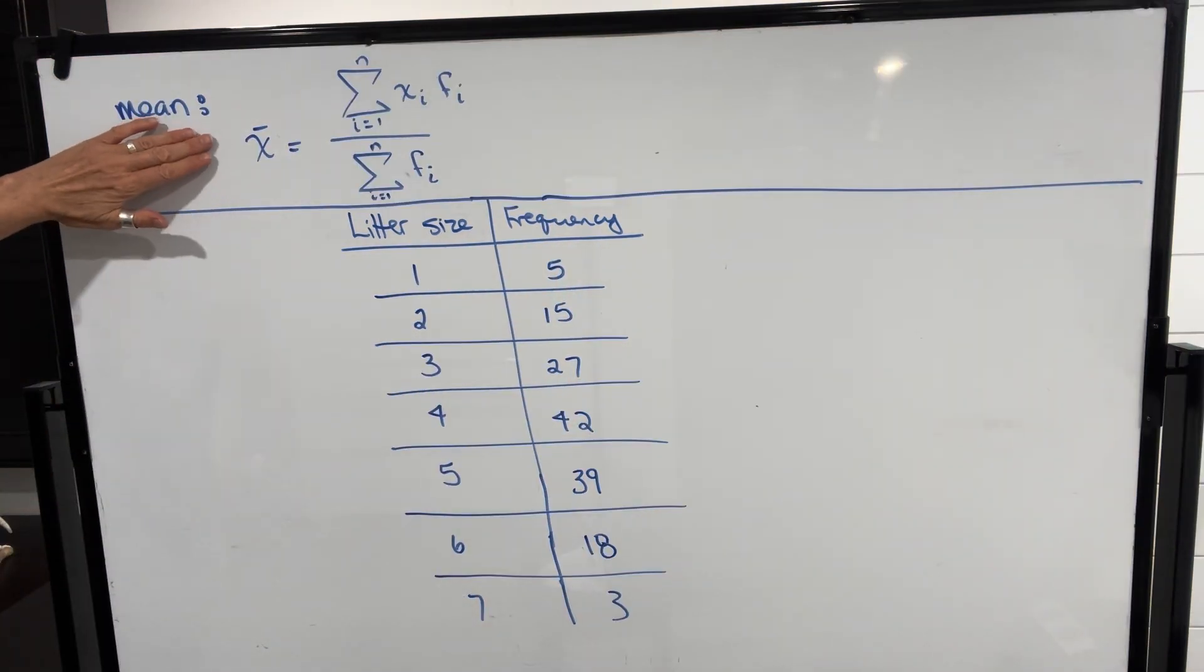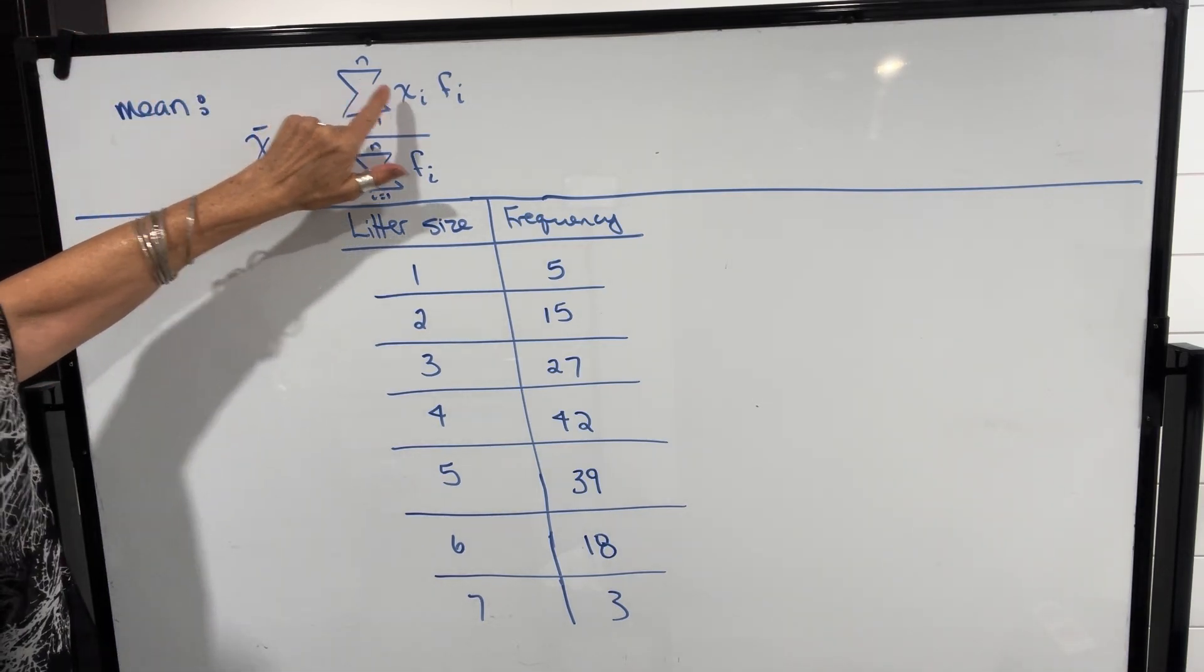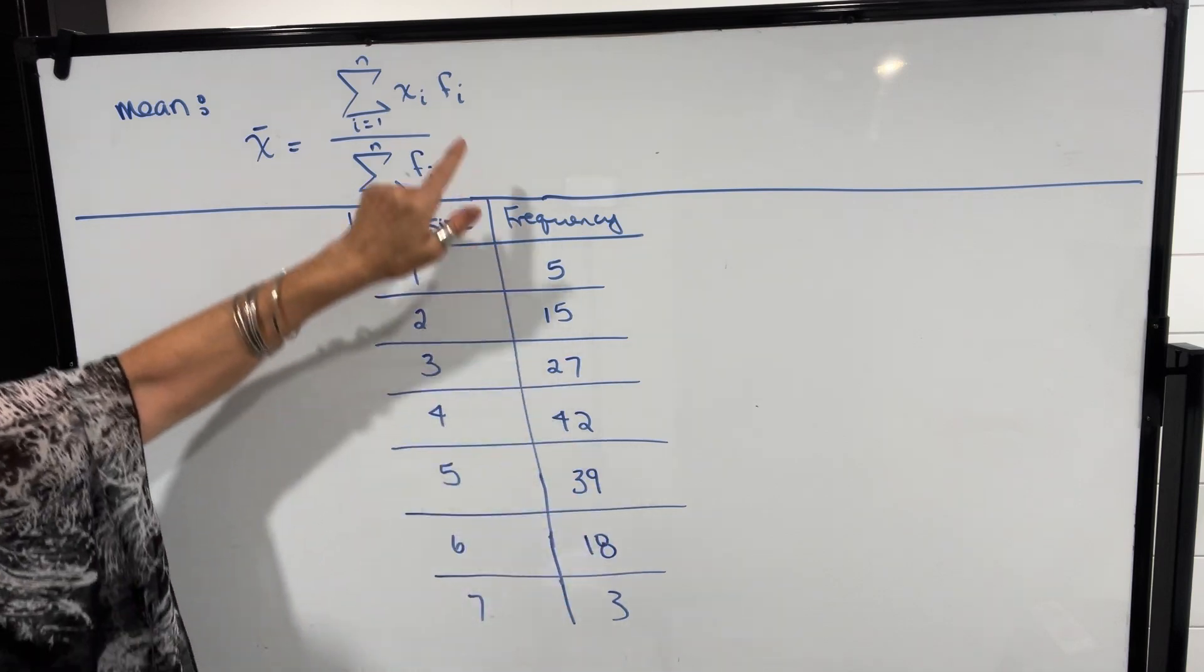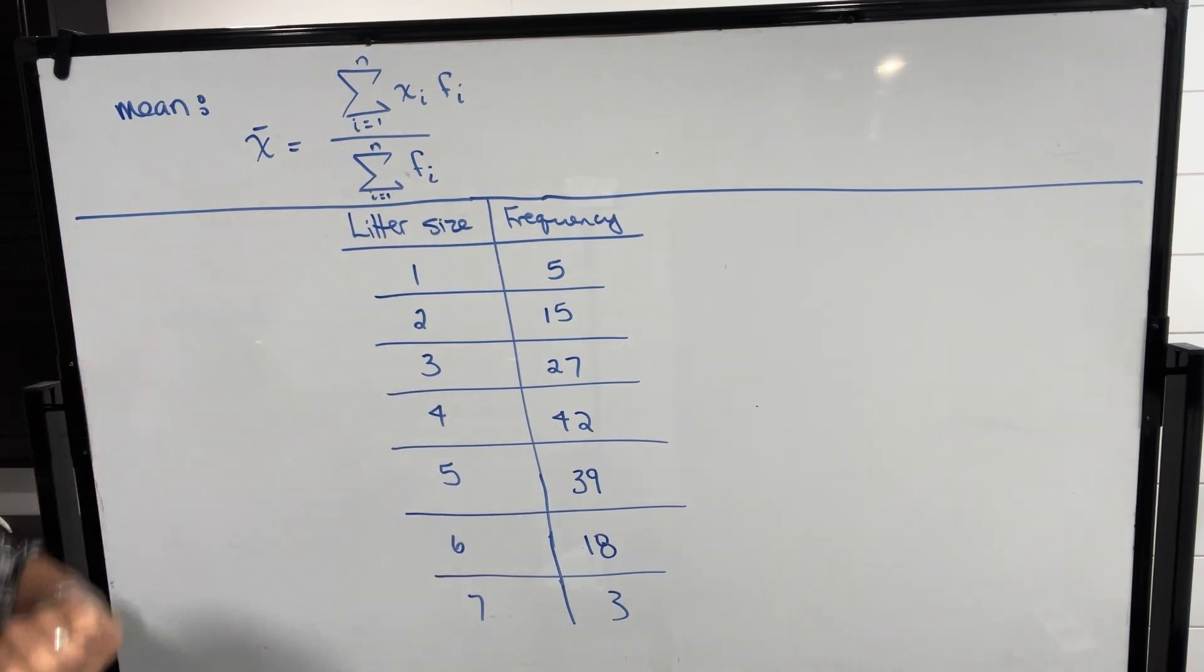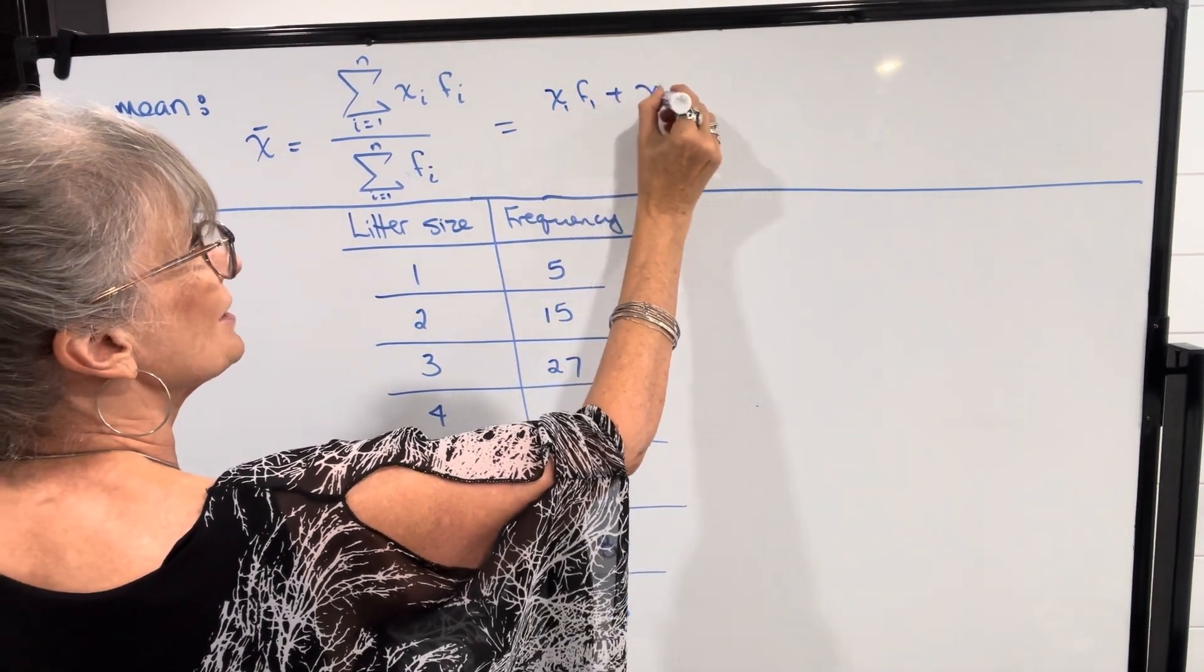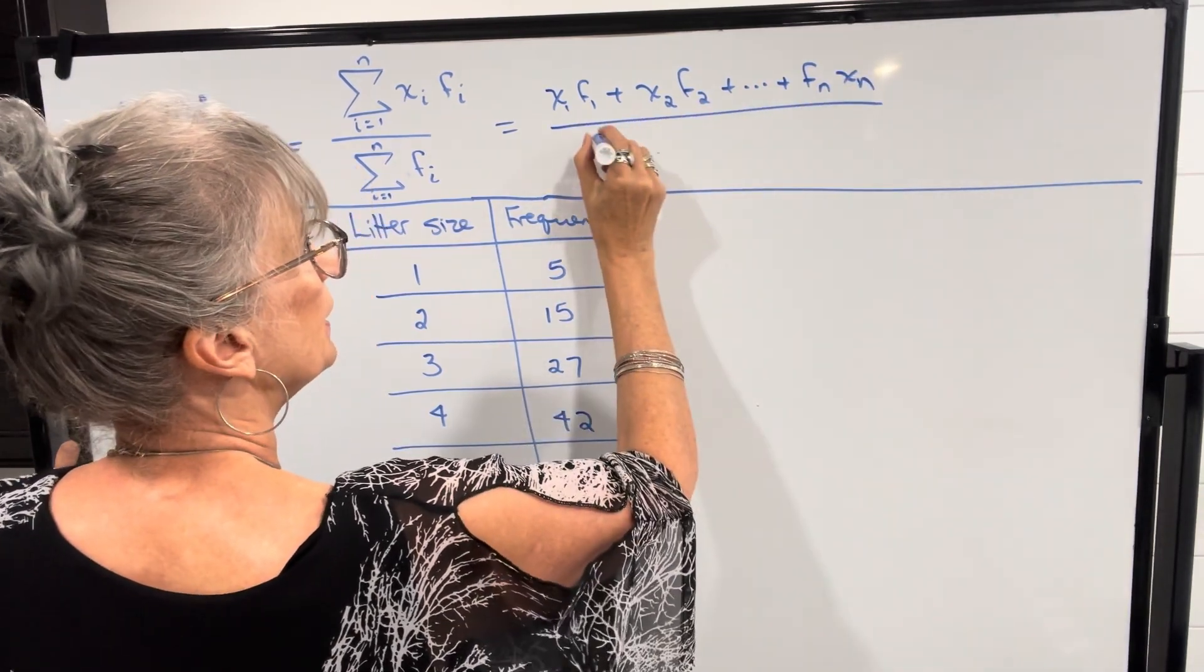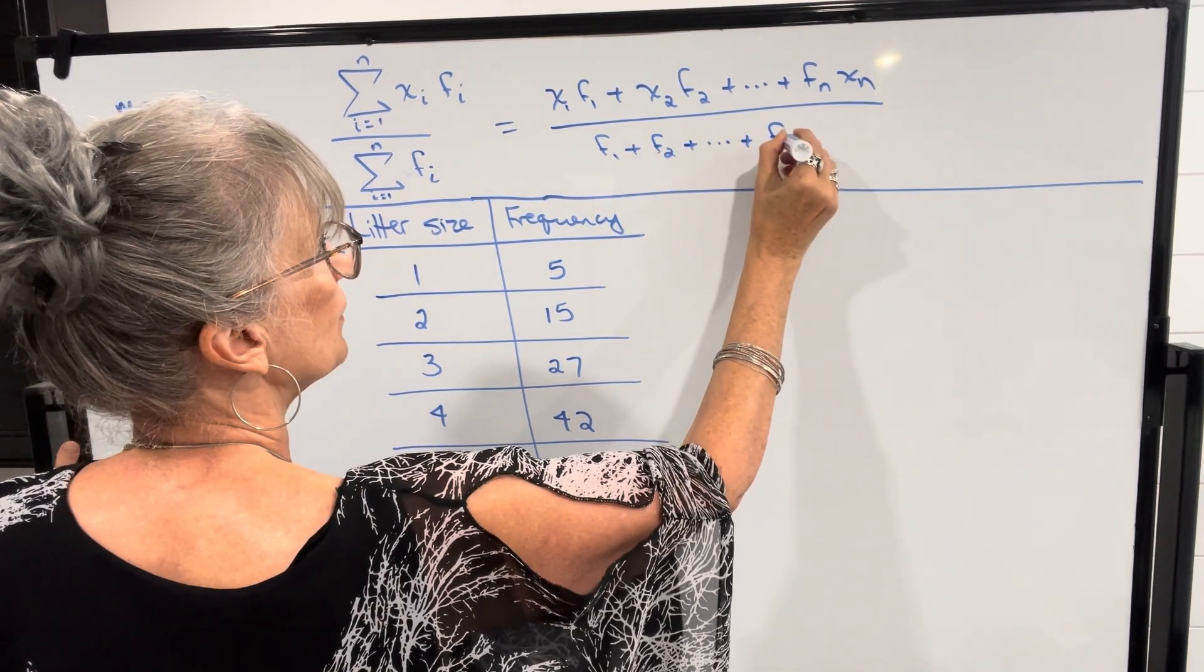In order to calculate the mean, we have this formula which looks a little intimidating, but it's the sum of the products of the x values, which are the litter sizes, times the frequency values, divided by the total number or the sum of the frequencies. So that means it would be x1 f1 plus x2 f2 and so on, divided by f1 plus f2 and so on, up to fn.